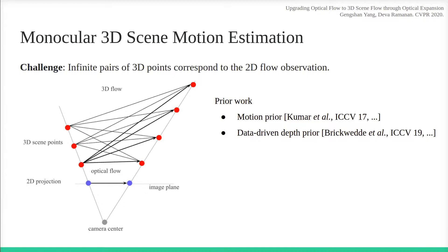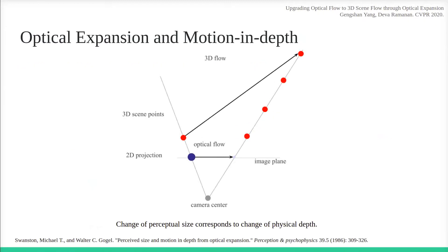Human perception informs us that perceptual sizes of an object correspond to its depth. Scene elements that move closer to the camera project to a larger apparent size. Specifically, assuming an orthographic camera and non-rotating scene elements, relative changes in image scale correspond exactly to relative changes in depth.